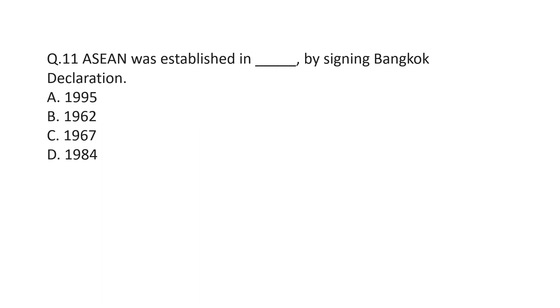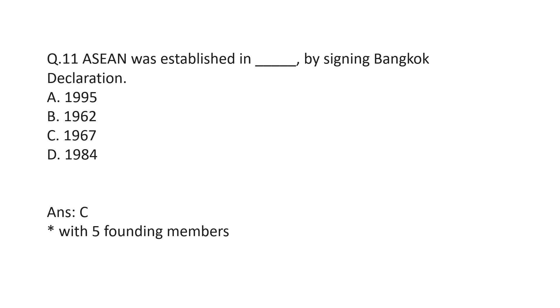Question number 11: ASEAN was established by signing the Bangkok Declaration. It was in 1967, and it was made up of five founding member countries initially.